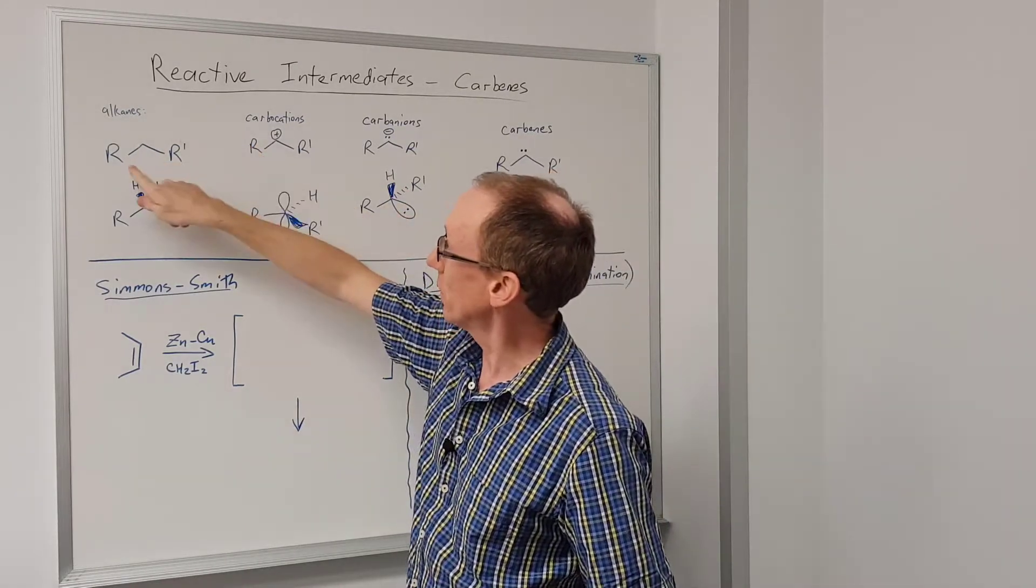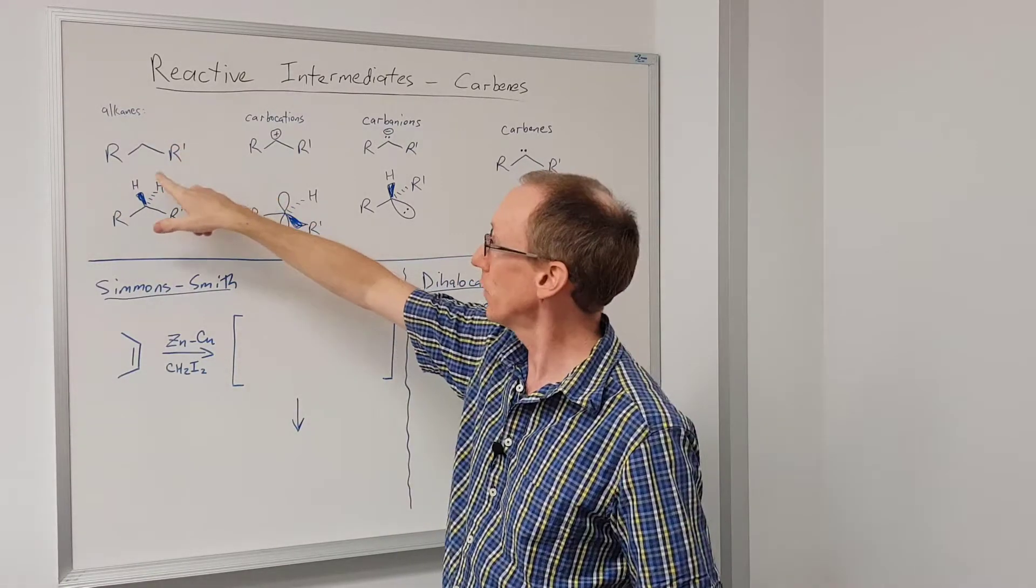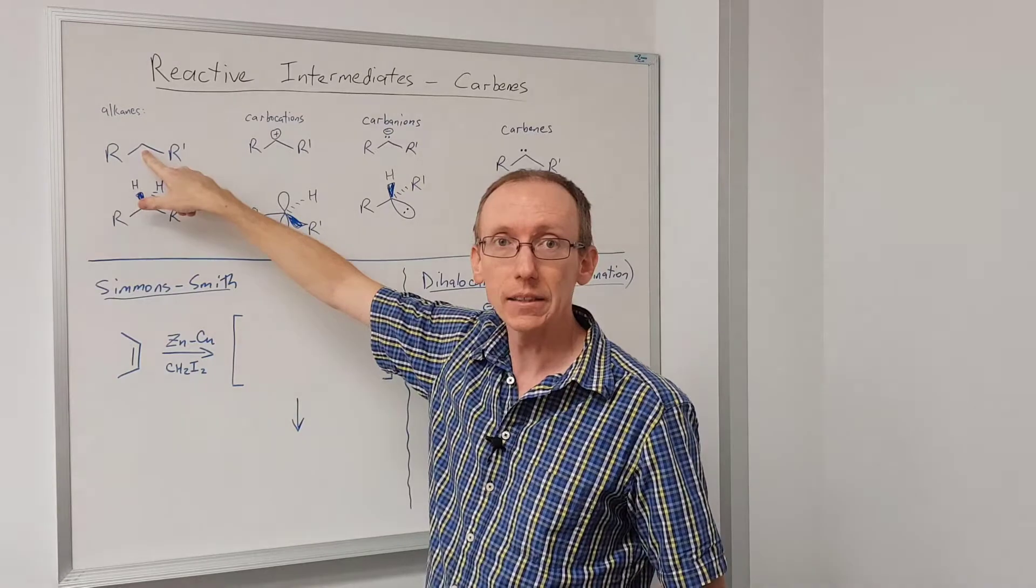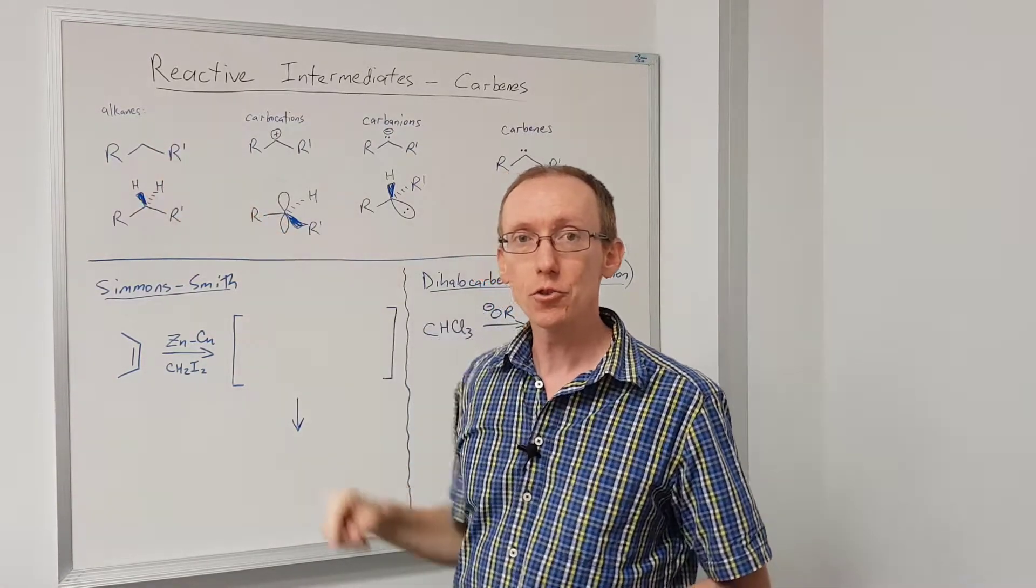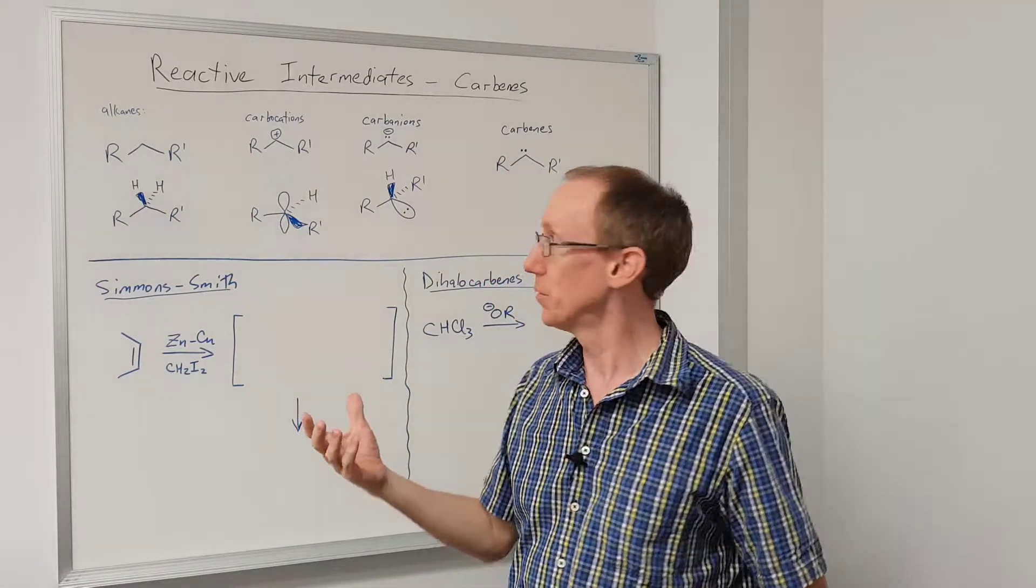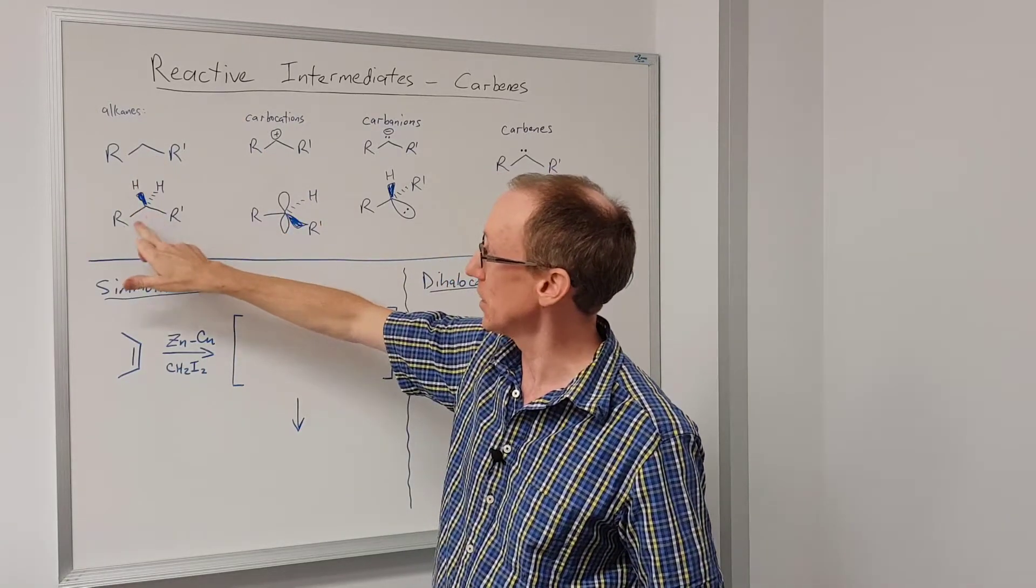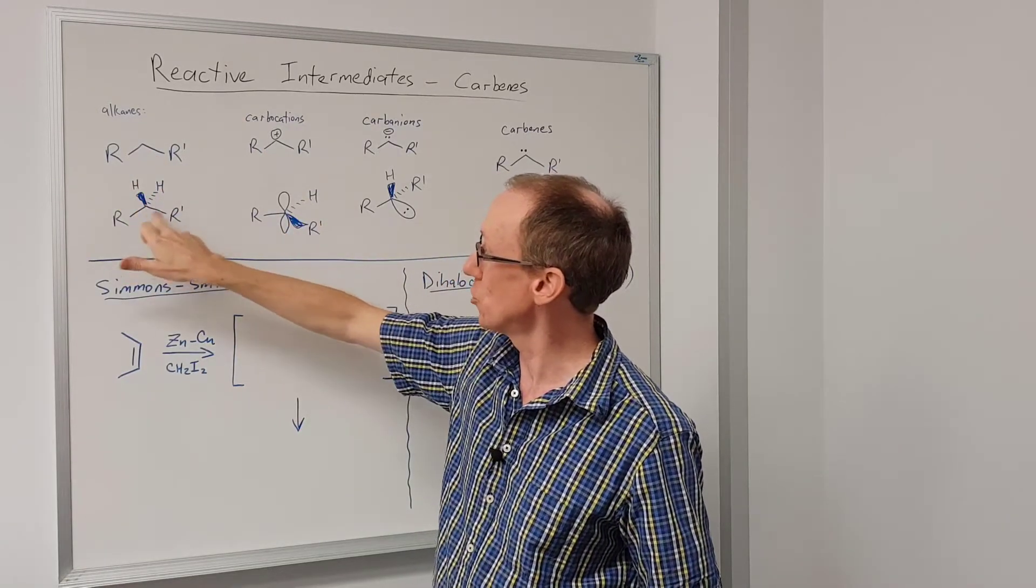Alkanes - when we draw an alkane, we'll normally draw a line bond structure. If we drew something like this we'd have two alkyl groups attached to a central carbon and we don't draw in the hydrogens, so they're implicit. That structure is really equivalent to this where we've got two hydrogens and two alkyl groups.